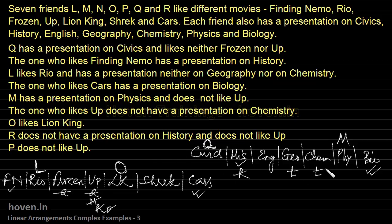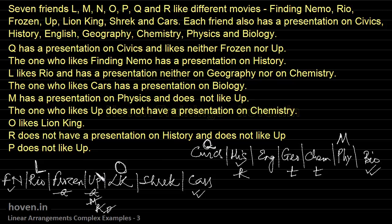After the first pass, we examine our markings. There are seven people: four of them (Q, M, R, P) can't come under Up, and two (L and O) are already allocated. That leaves only one person — N — who can safely be put under Up. So N is allocated to Up.